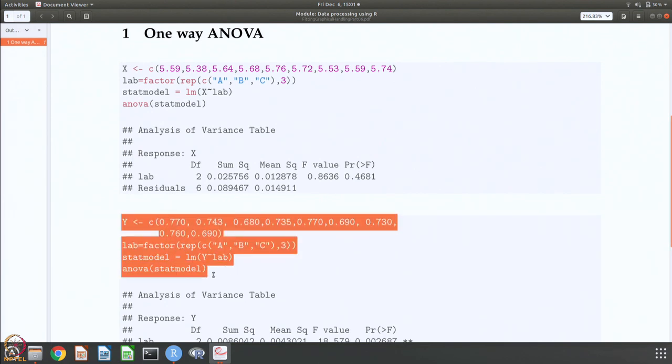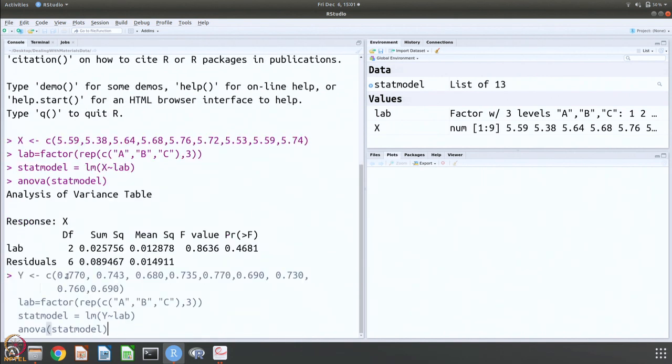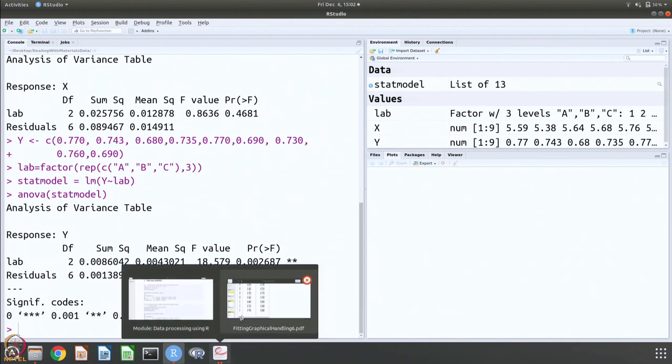Let us do it for Y. It is rather trivial, it is the same type of exercise. The numbers have to be fed correctly and if you feed them, you call for the statistical model and do an ANOVA and you get the analysis of variance table. You can see that F value is 0.86 here, 18 here. So probably in this case the differences are significant and probably in this case the differences are not significant. This is something that you have already seen in the other part of the course. This is just to show you that in R you can do it with just one line command and the book by Faraway gives you more information.